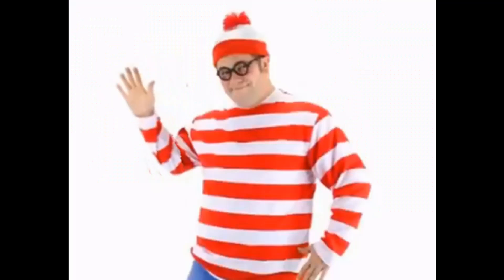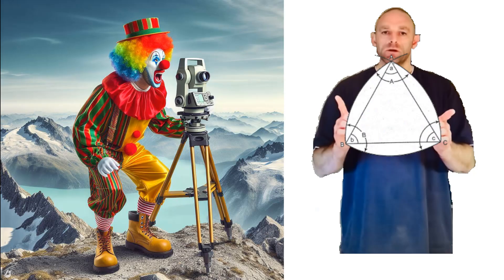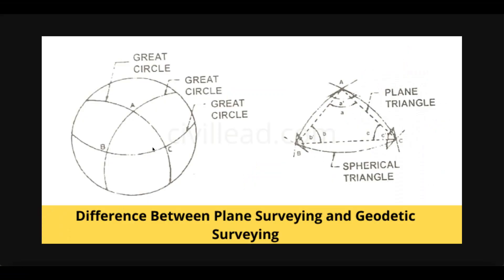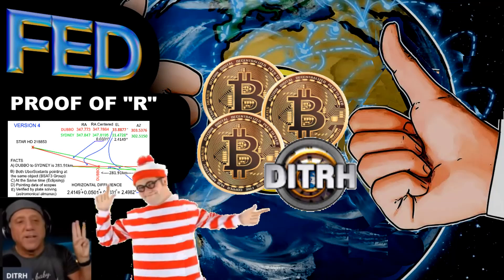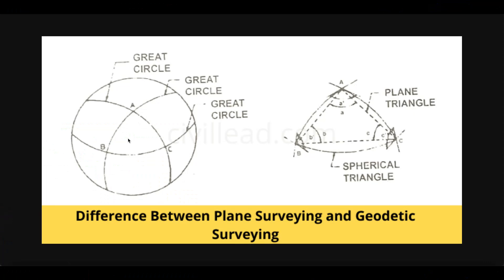G'day everybody, Wally here once again. I hear Brian and spherical triangles - he is banging on yet again. Let's have a listen to something Brian said: 'There has never been measured as a globe - there is no R value measurement for a globe. There's no measurement or system of measurement that measures the Earth as a sphere. There is a system of measurement for a sphere, but there's no system of measurement that measures the Earth as a sphere. It just doesn't exist, full stop.'